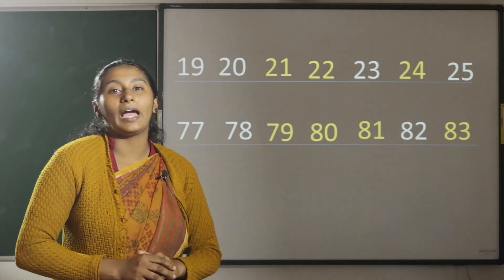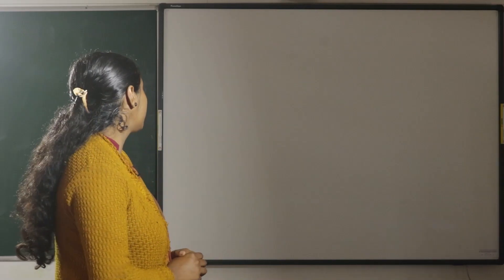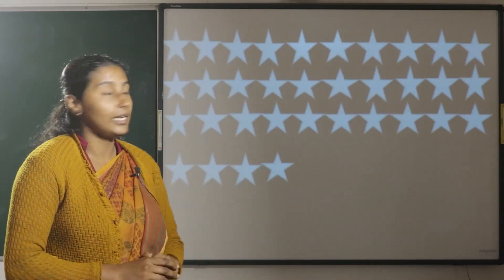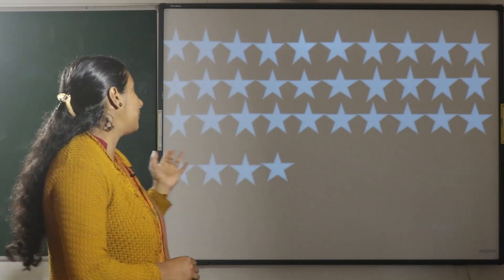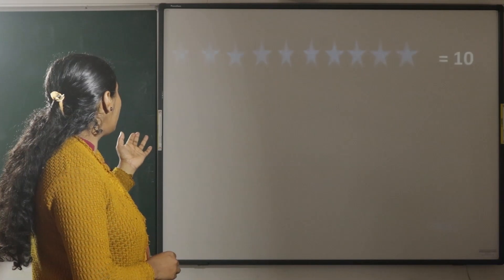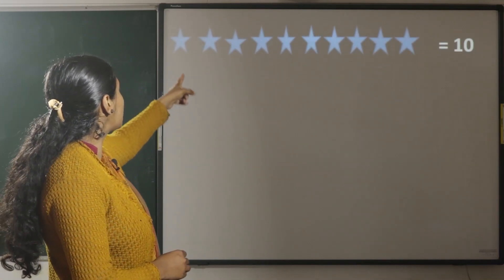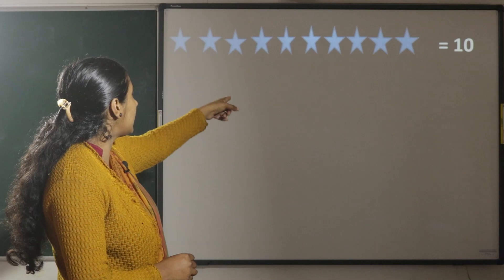Now, grouping and counting. Grouping. There are many stars. How many stars are there? Shall we count them? Now, in first line, 1, 2, 3, 4, 5, 6, 7, 8, 9, and 10.